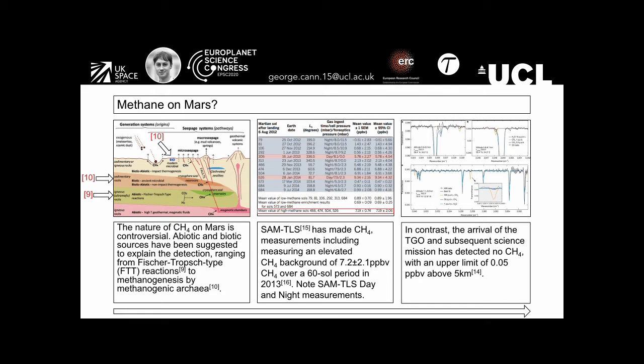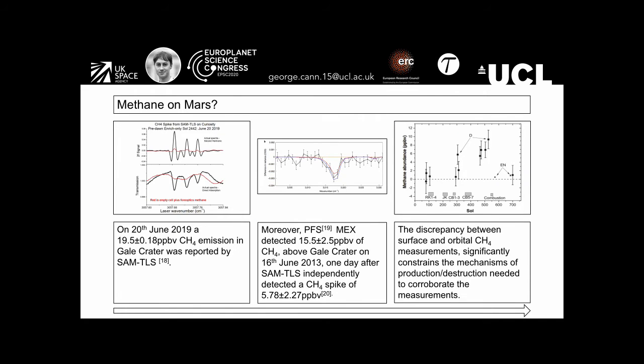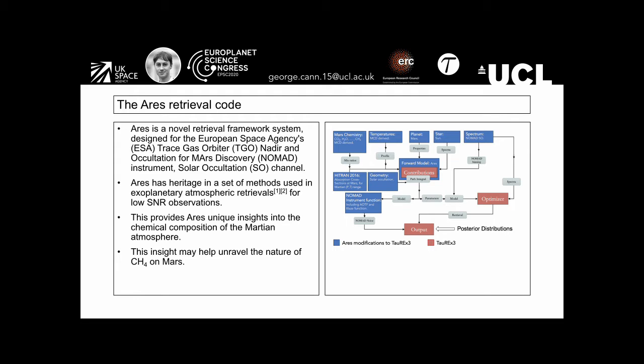However, in contrast, the arrival of the Trace Gas Orbiter and its subsequent science mission has detected no methane, with an upper limit of 0.05 parts per billion above five kilometers. Furthermore, on the 20th of June 2019, a 19.5 plus or minus 0.8 parts per billion methane emission in Gale Crater was reported by SAM-TLS. Moreover, the Planetary Fourier Spectrometer on board Mars Express has detected a 15.5 plus or minus 2.5 parts per billion methane detection above Gale Crater. This was done on the 16th of June, one day after SAM-TLS independently detected a methane spike. So there is a slight discrepancy between surface and orbital methane measurements, and this constrains the mechanisms of production and destruction that are needed to corroborate the measurements.